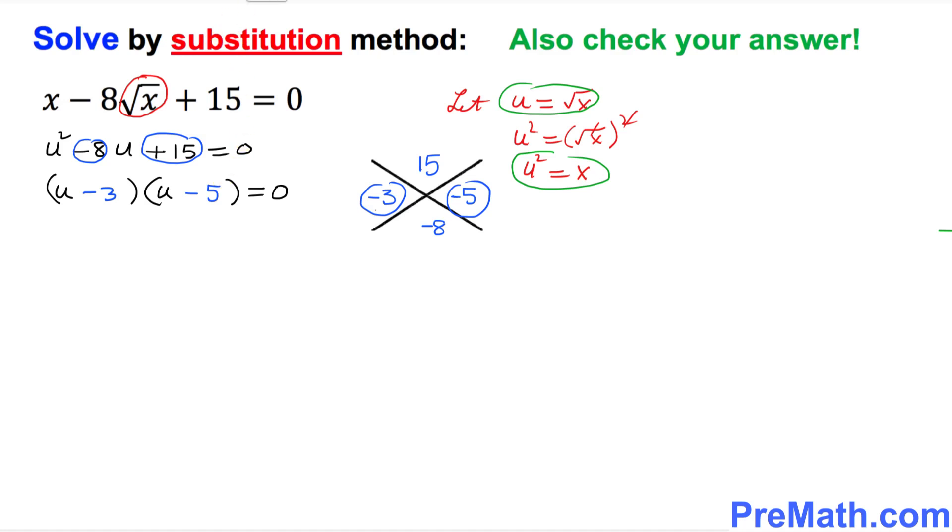So next step is, let's go ahead and split them up. So I'm going to say u minus 3 equal to 0 and this one u minus 5 equal to 0. So the next thing is, that's going to give you u equal to 3 and here u equal to 5.